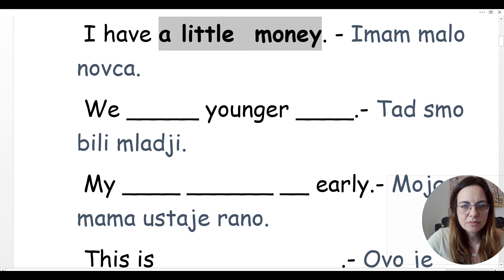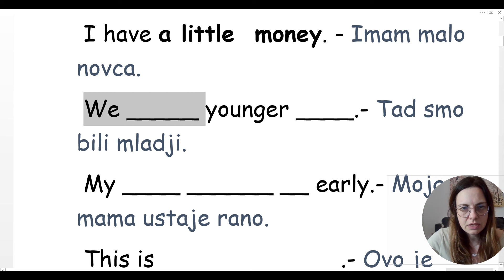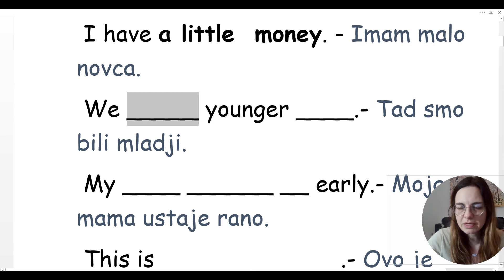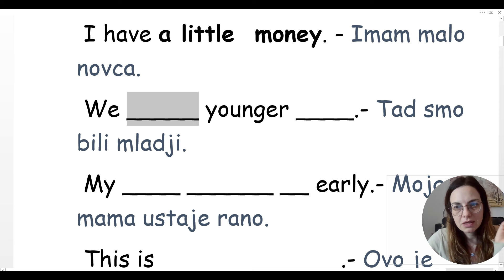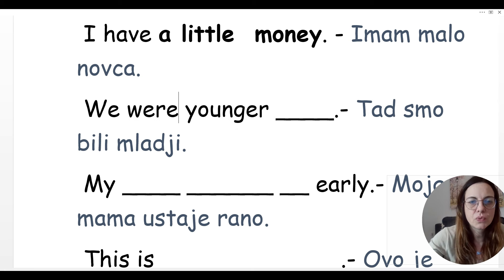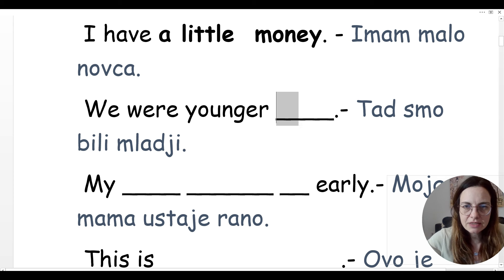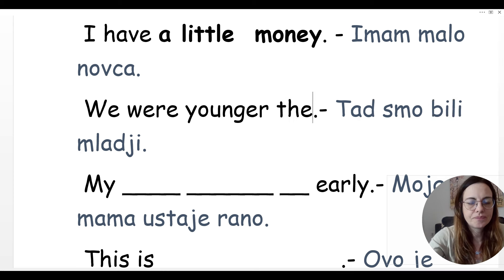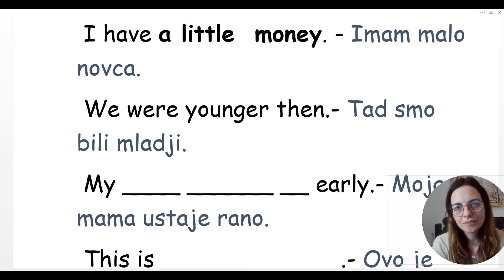Mi smo tada bili mlađi. Mi — we, bili — younger, tada — then. Znači mi smo bili — glagol biti, a simple tense — we were younger. Tada se kaže 'then': we were younger then.